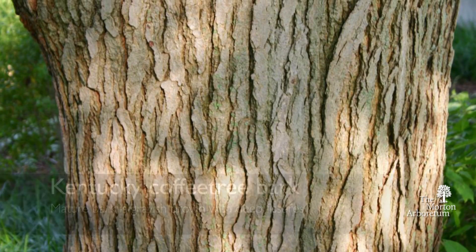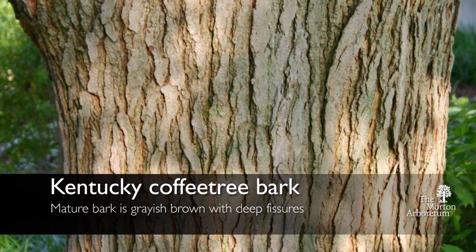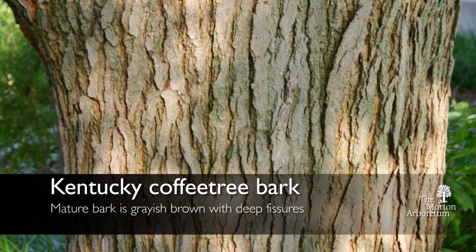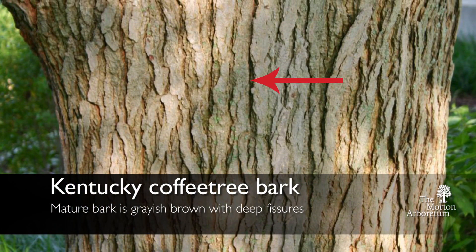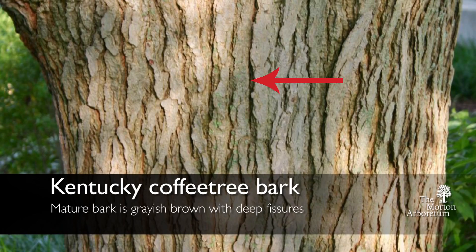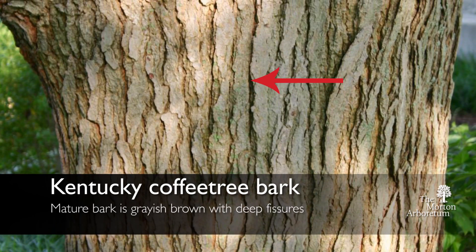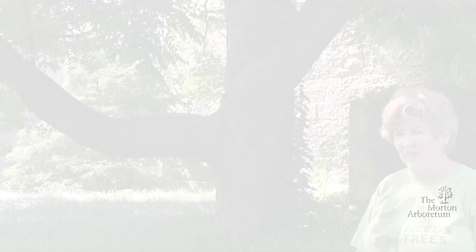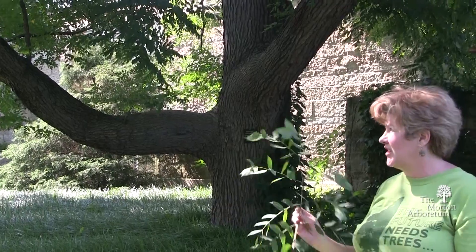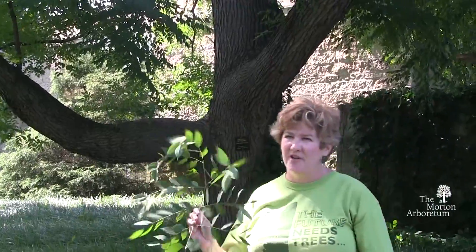The Kentucky coffee tree also has mature bark with deep fissures, and it's a dark grayish to brown color. So remember, if you have a Kentucky coffee tree in your yard and it's not making seed pods, chances are you have a male version of the Kentucky coffee tree.